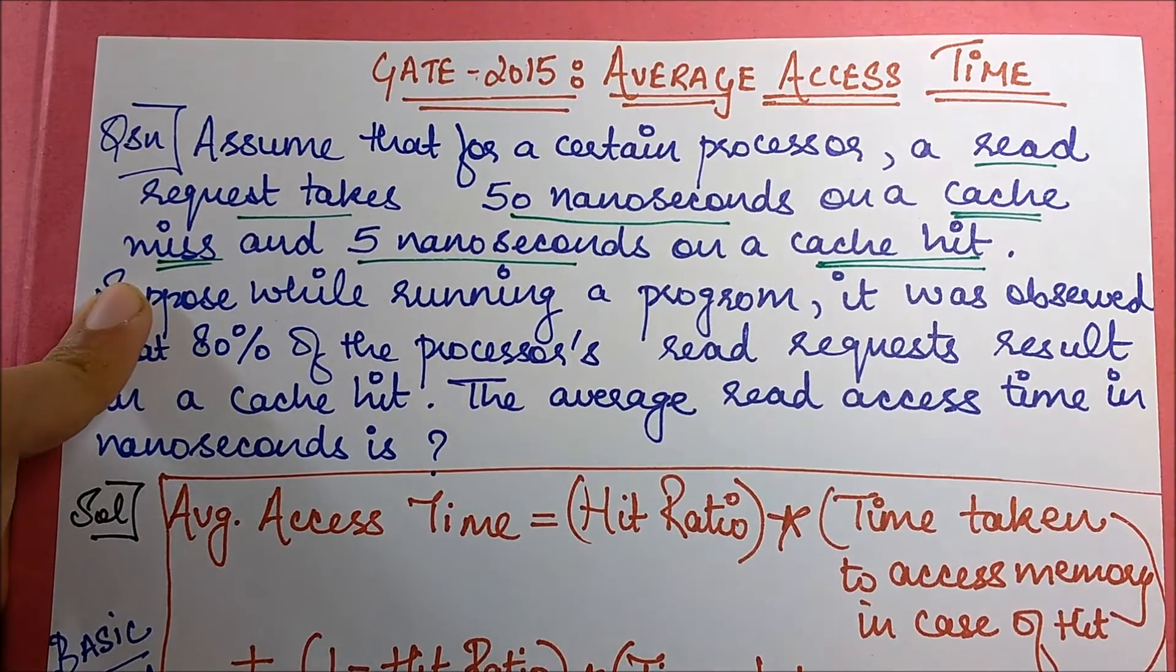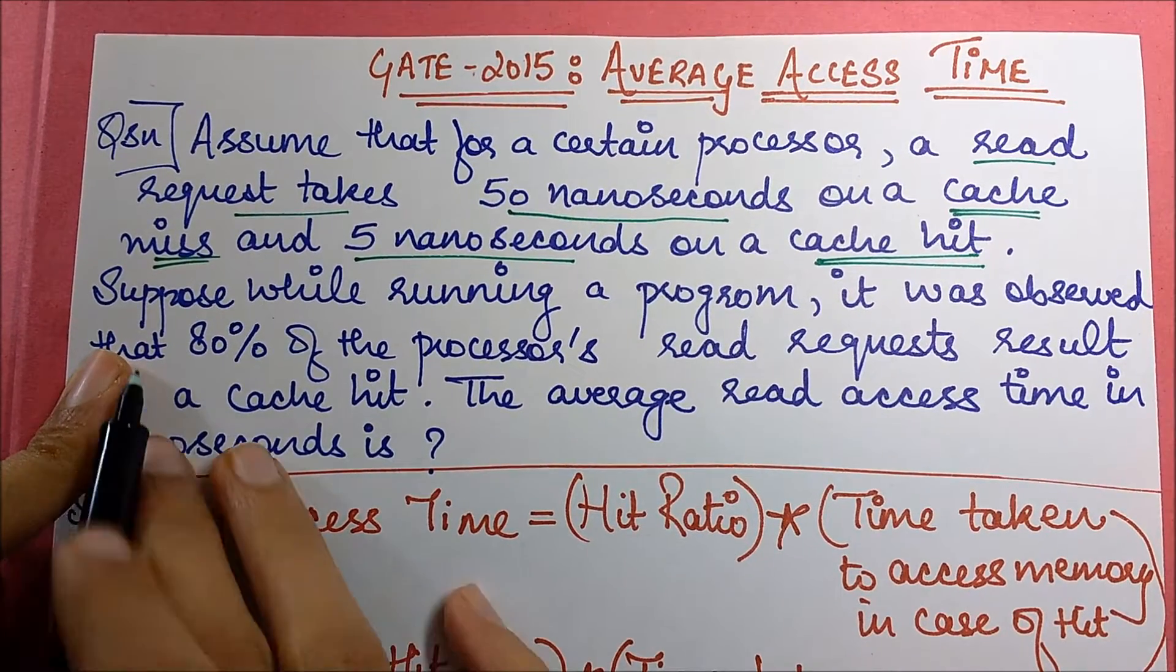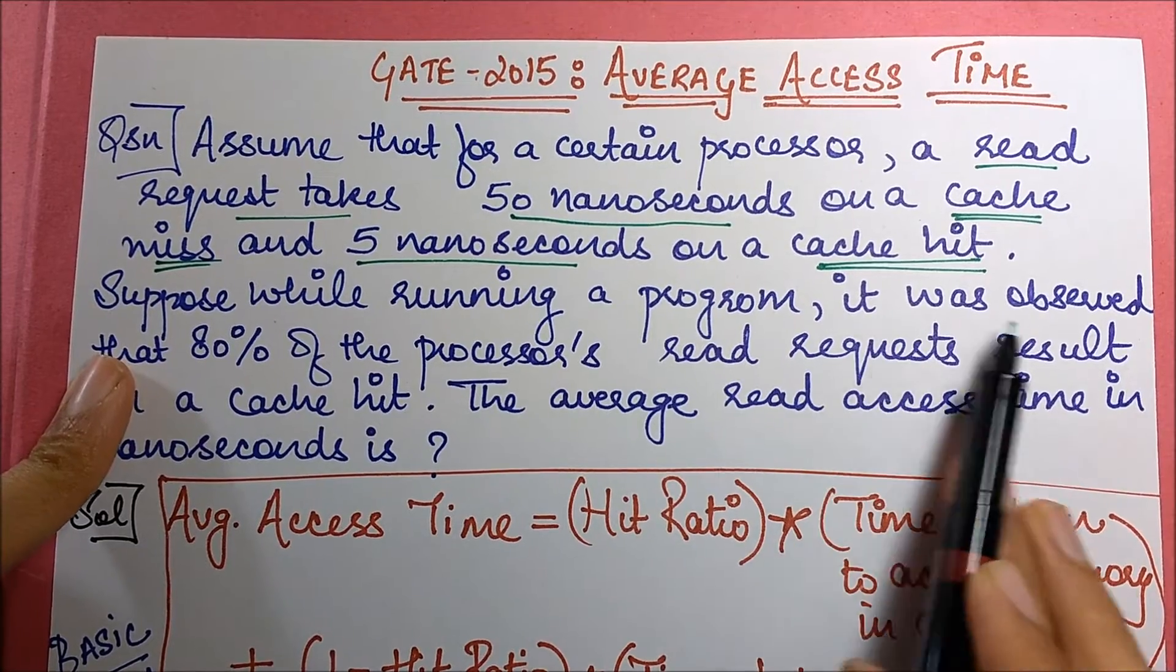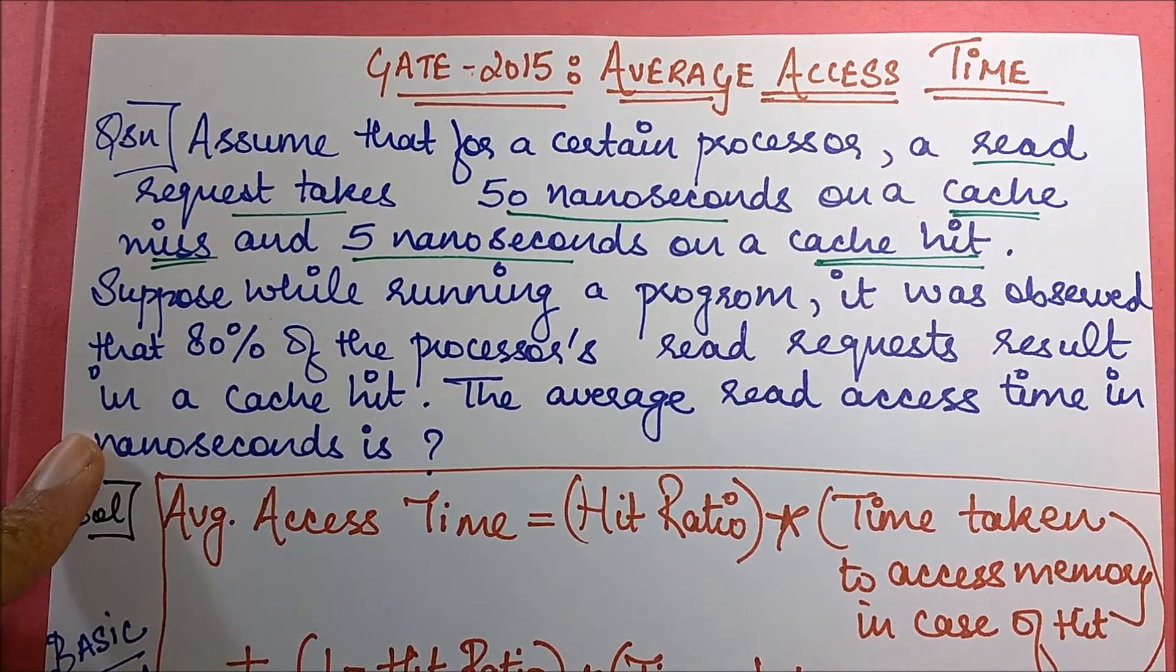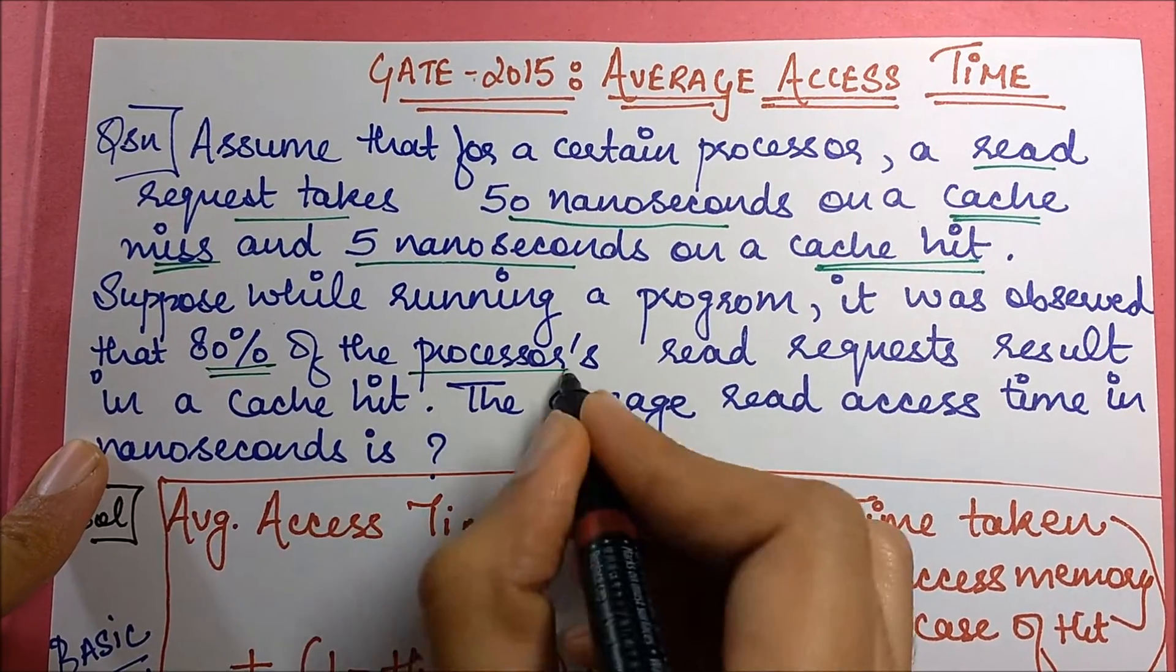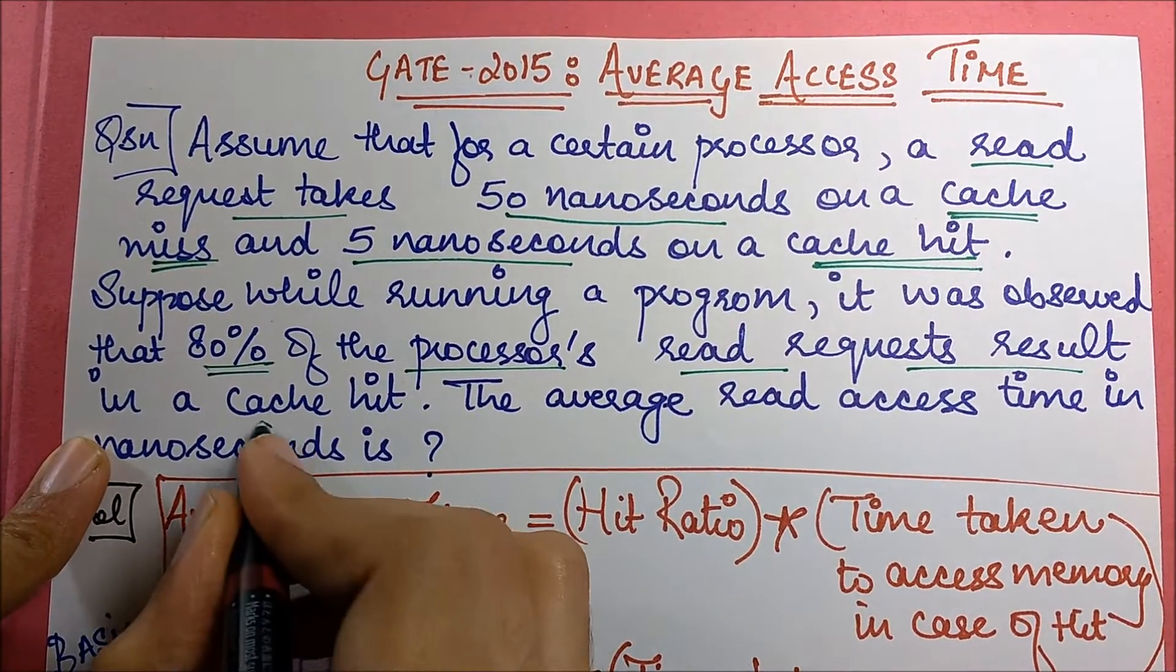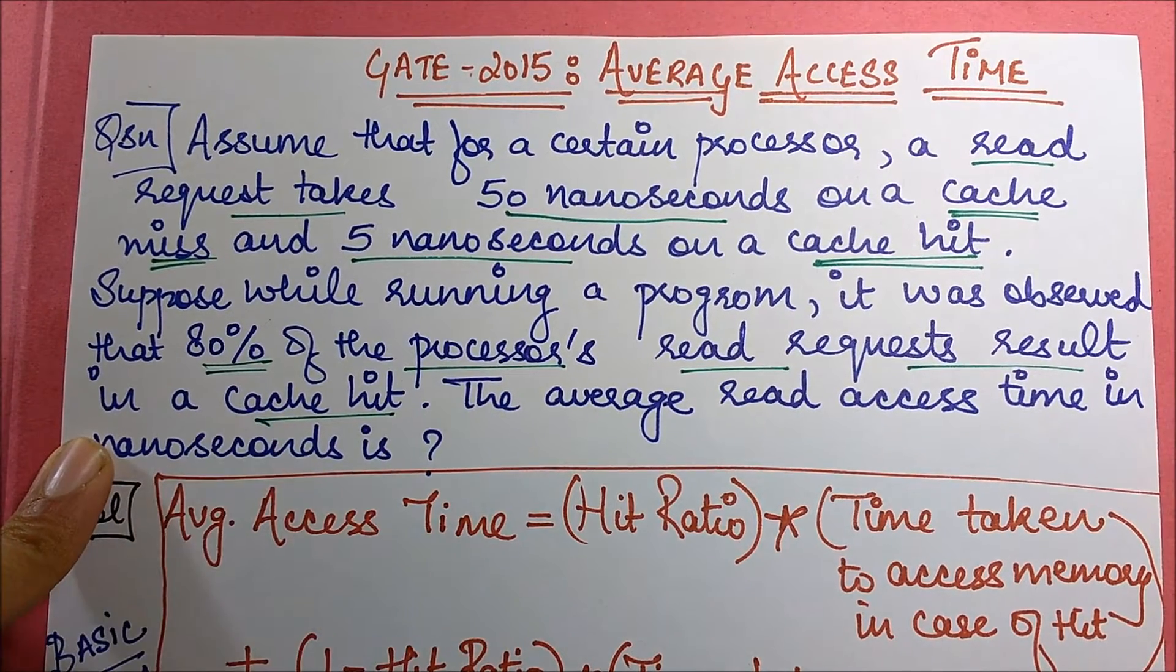Suppose while running a program, it was observed that 80% of the processor's read requests result in a cache hit. So what is this? This is your hit ratio.